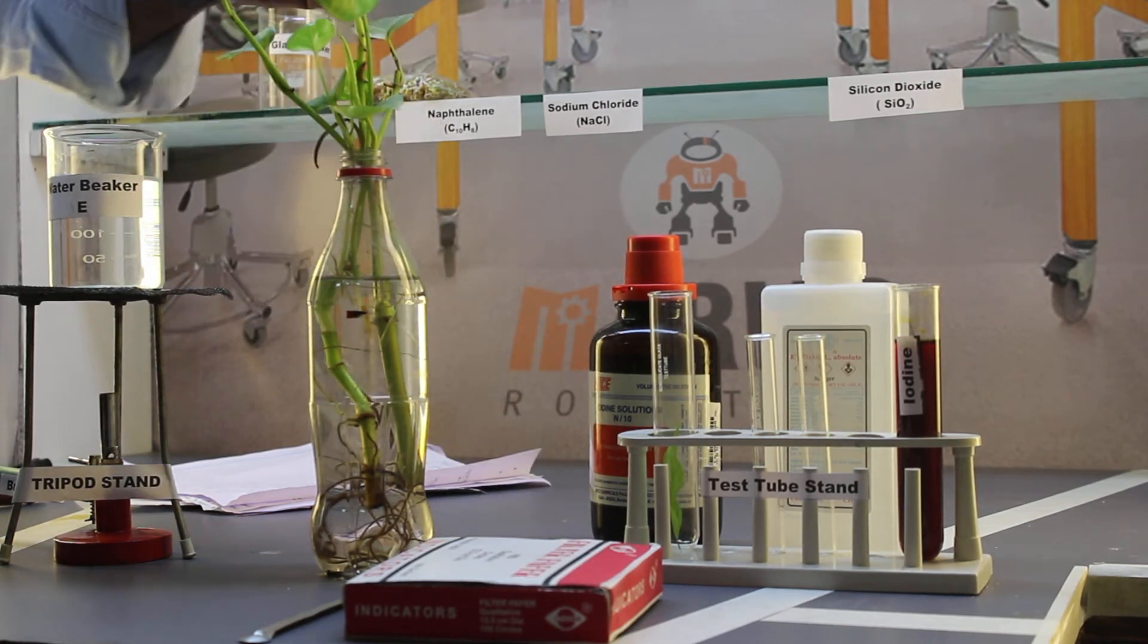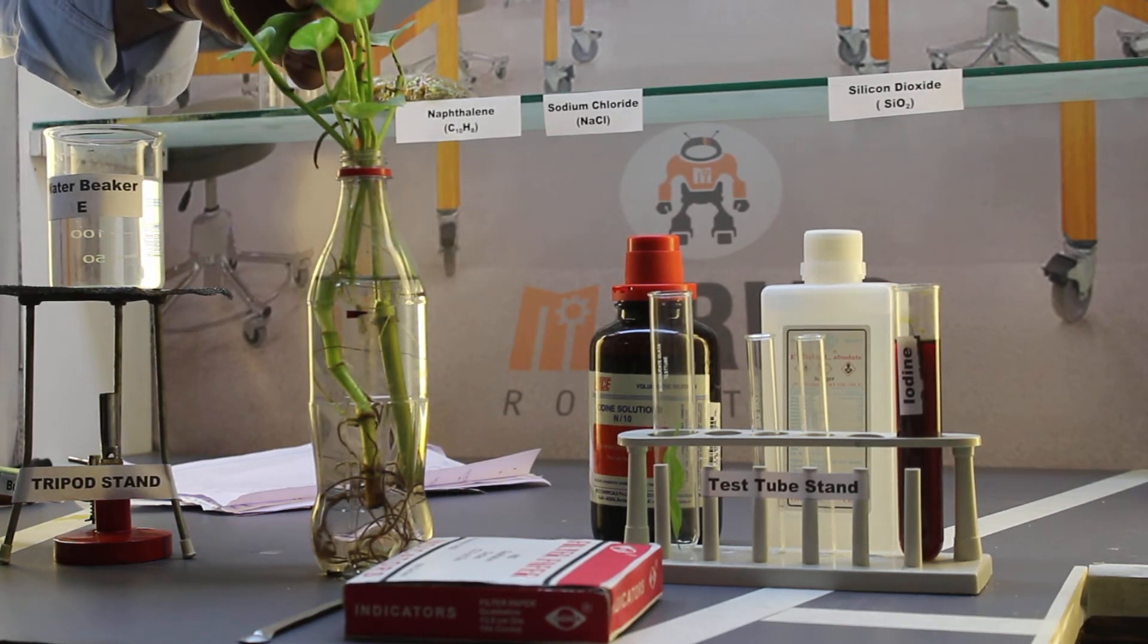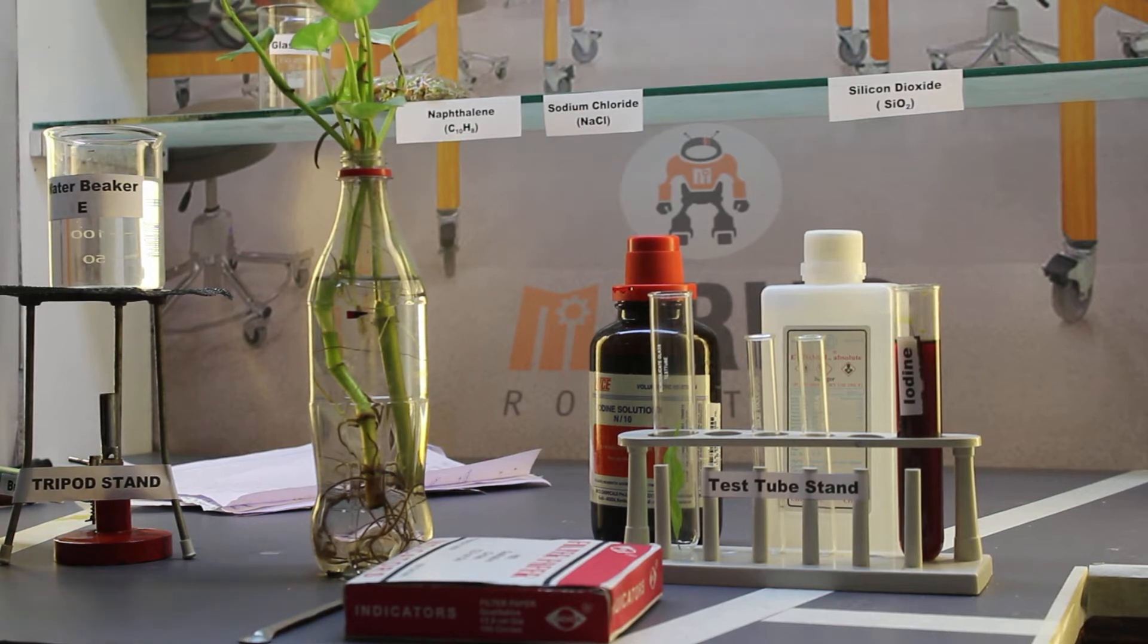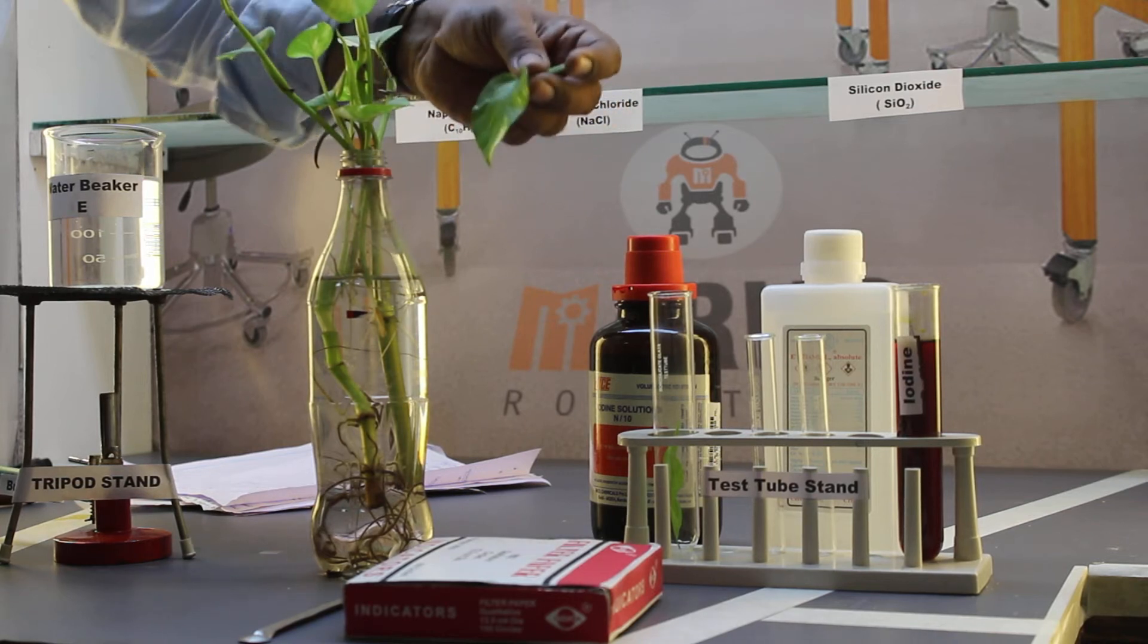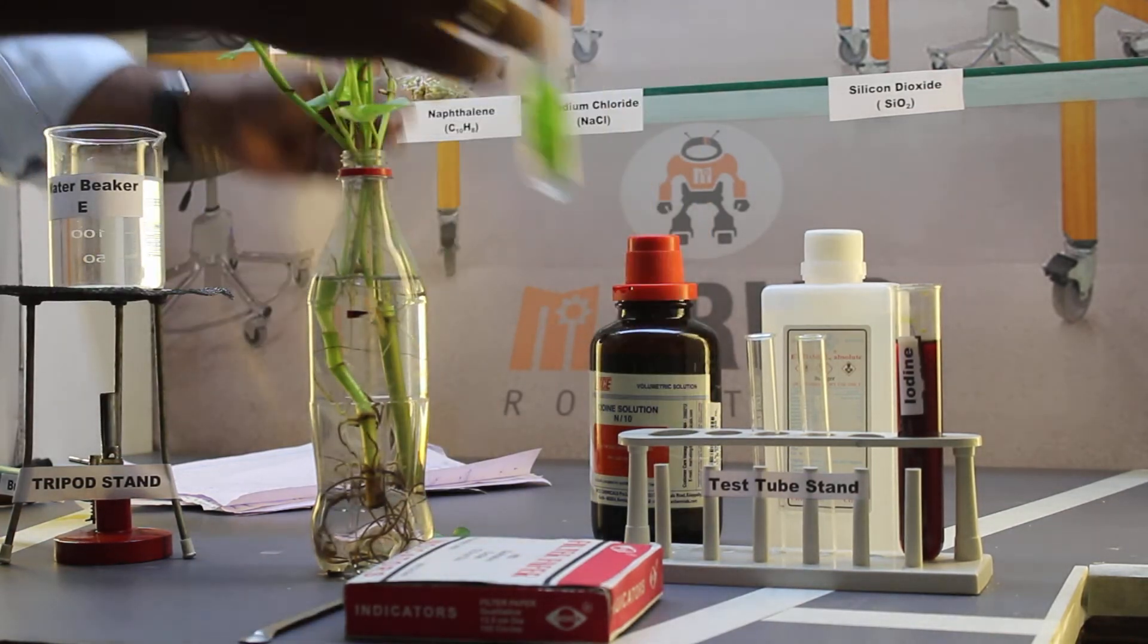Now what we have to do is detach a leaf from the potted plant. After detaching the leaf from the potted plant, keep it aside. Now take a test tube.